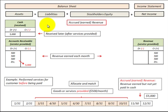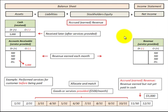In summary, we accrue or earn those goods or services by providing them upfront before we get paid in cash, and then we recognize that revenue in the revenue account, increasing it as part of net income on the income statement. Remember, this revenue account closes at the end of the period to the stockholder's equity account on the balance sheet. Then when we get paid, we reduce accounts receivable and increase cash by that amount. We'll see you next time.